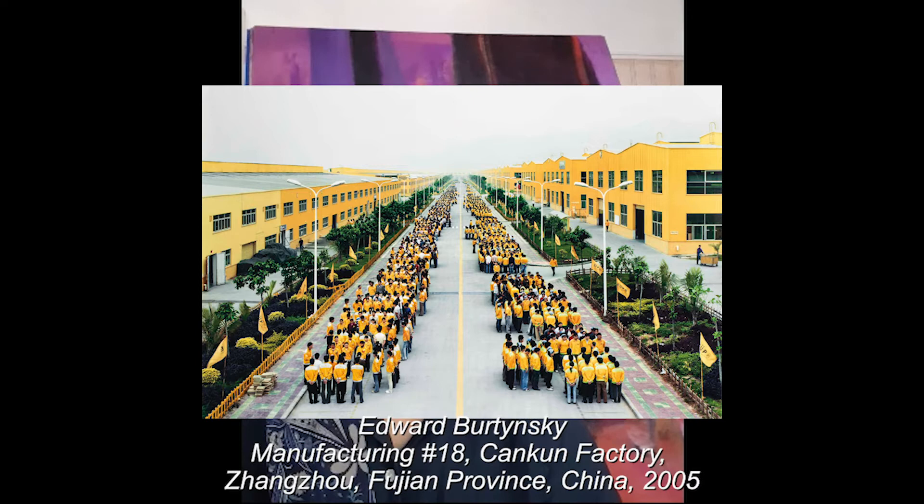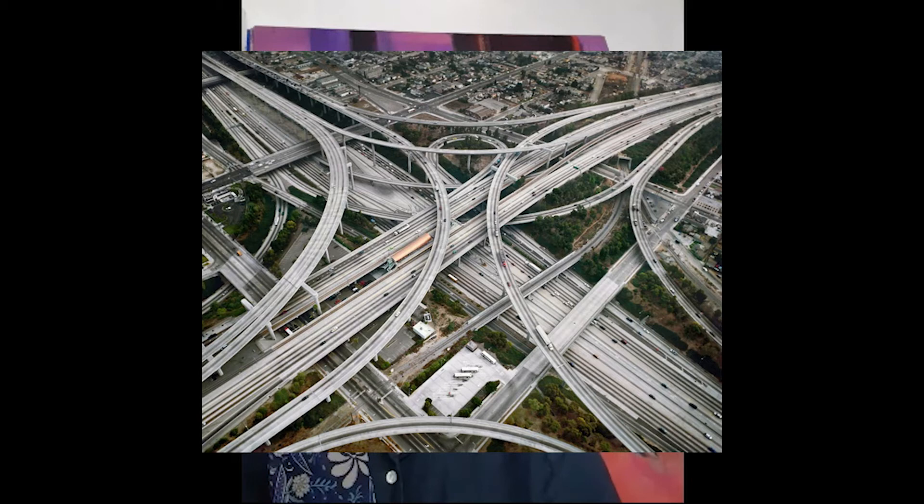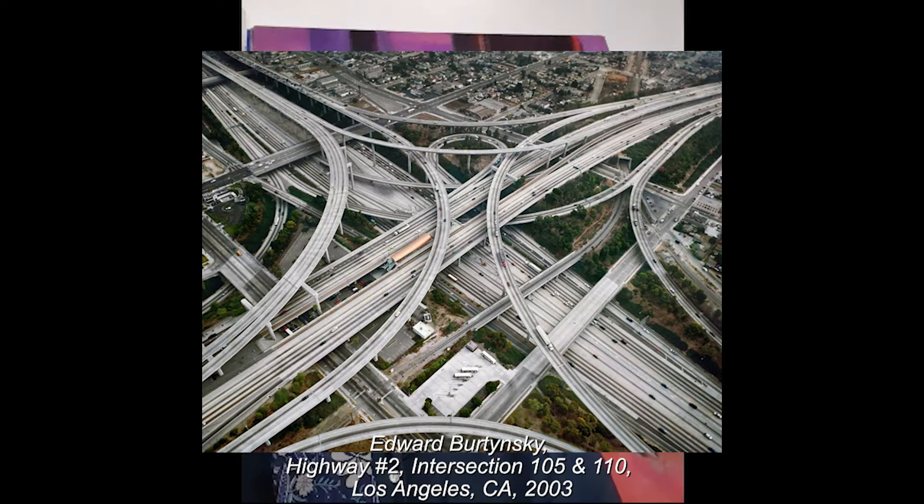That power continues to be wielded with new industries in a changing landscape. This contemporary photograph by Edward Burtynsky shows contemporary industry in China on a vast scale, and something we are all familiar with: an overhead view of a kind of spaghetti junction in California, with Burtynsky focusing on the scale of how we are changing the planet, the human presence signified by the vehicles travelling at high speed.